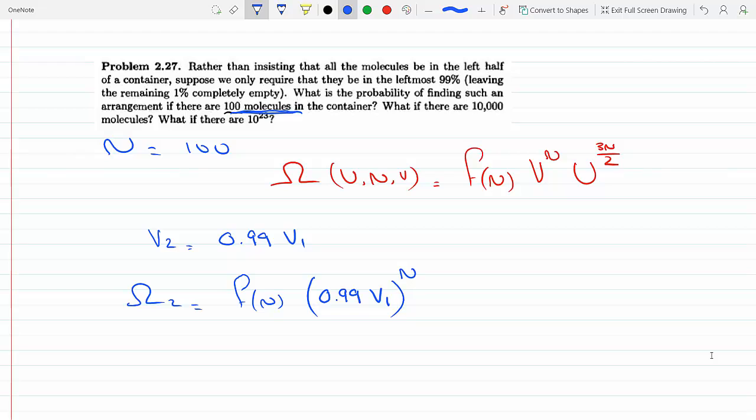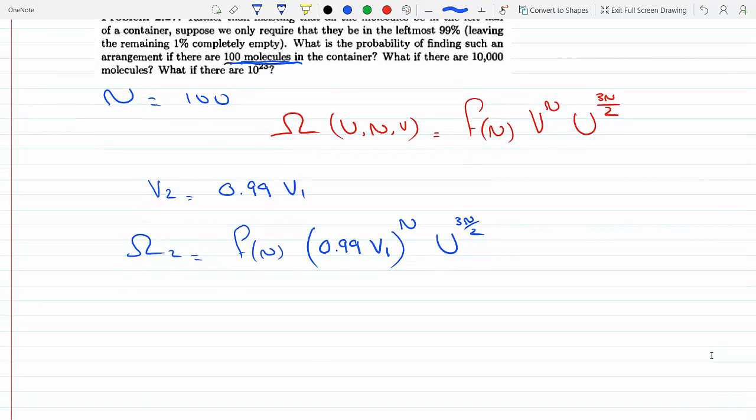To the N, and then U to the 3N over 2. We know that the probability that the molecules are in 99% will just be the ratio between the multiplicity of this arrangement divided by the multiplicity of the total.